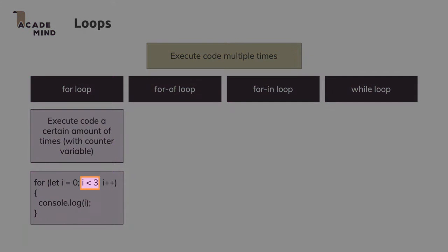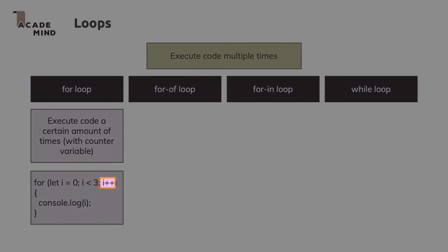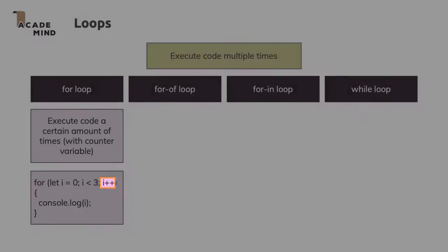An exit condition which basically defines when we stop executing that code between the curly braces. And then we have, separated by another semicolon, the code that should run after every loop iteration. And there you could do whatever you want, but typically you just change that variable which you initialized and which you also use in your exit condition.